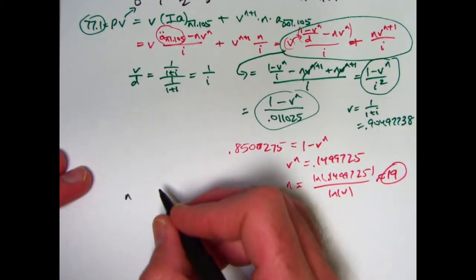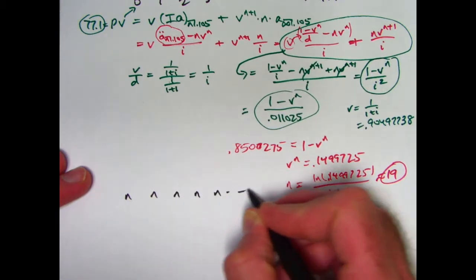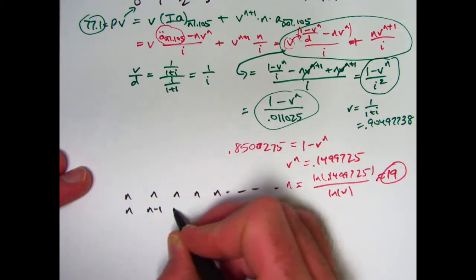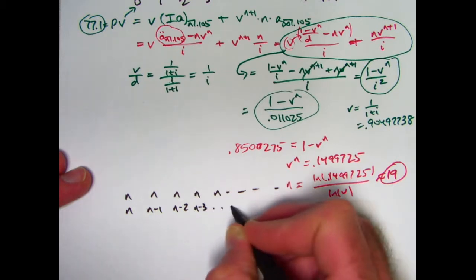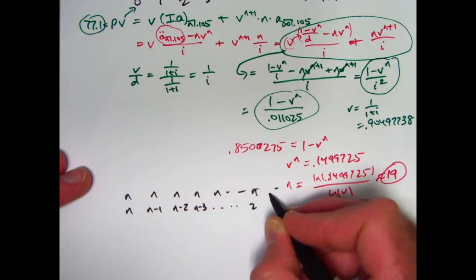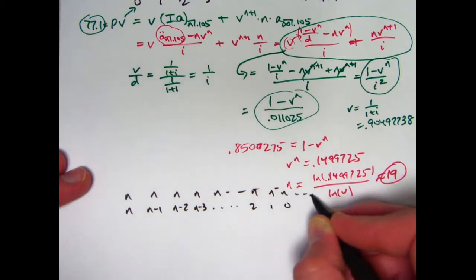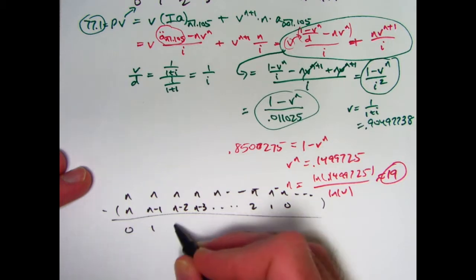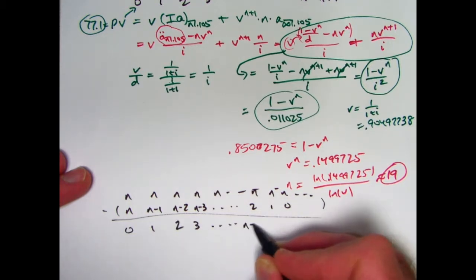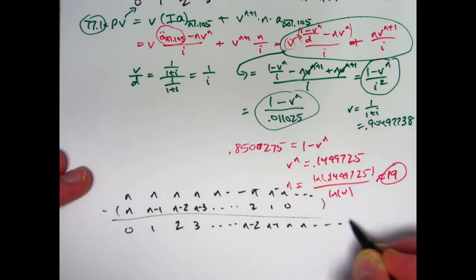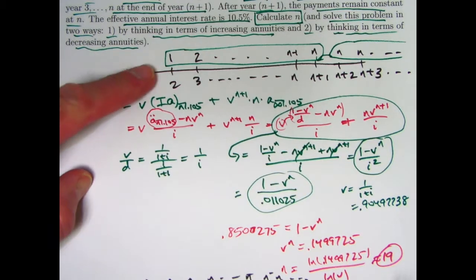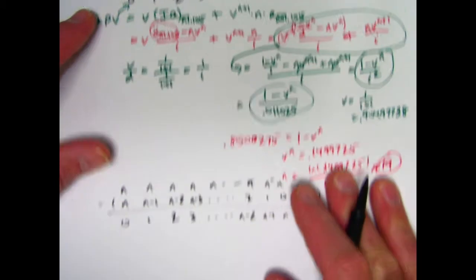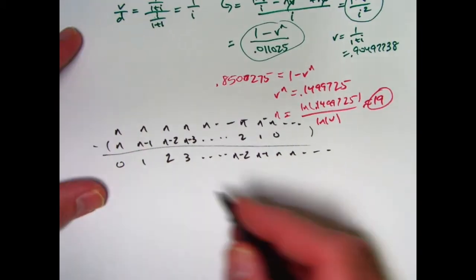Think of it this way. You've got a level annuity with payments of N, a perpetuity, I should say. And you've got a decreasing annuity, N, N minus 1, N minus 2, N minus 3, etc. Down to 2 and 1, and then 0 after that. The N's keep going. If you subtract the bottom annuity from the top annuity, you get 0, 1, 2, 3, etc. N minus 2, N minus 1, N, and etc. You get exactly what we had up here originally, thinking of the first payment here at time 0 as really being a 0. Pretend it's a 0. That will match this.